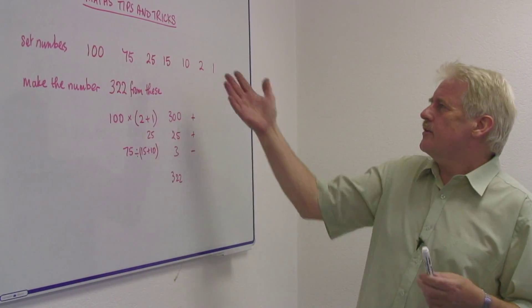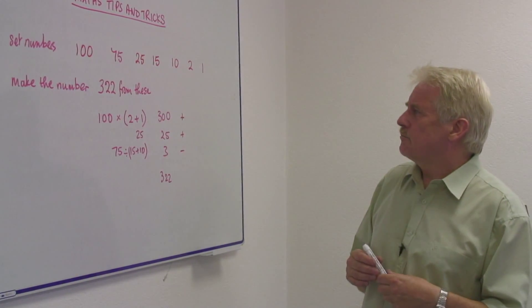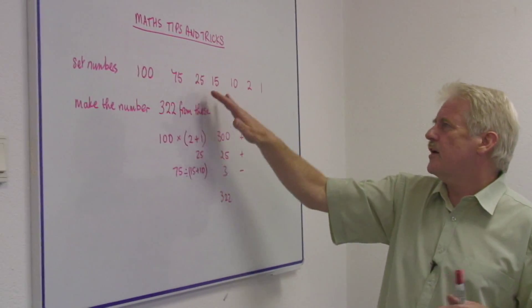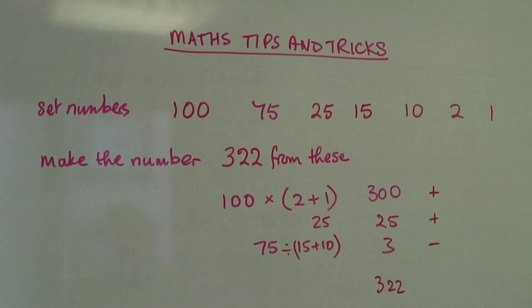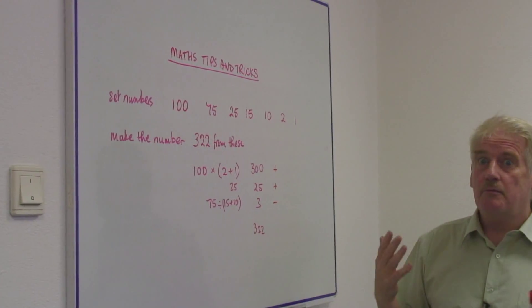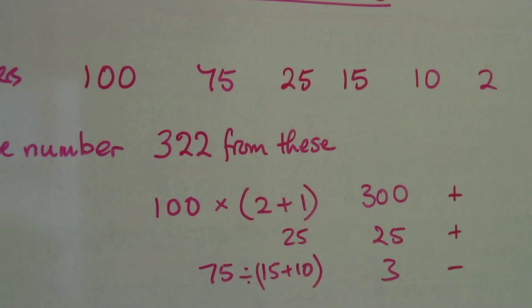This is a very simple one. I think many people have seen this. You can say I've got 100, 75, 25, 15, 10, 2, and 1. And from those numbers I have to make up a number 322.